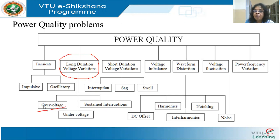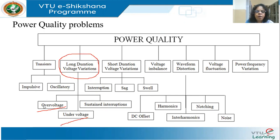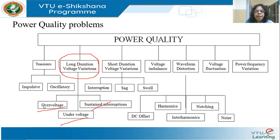Under long duration voltage variations, we have over voltage — the name tells you it is more than what is required — then under voltage, and sustained interruption. Interruption means no power for the customer.